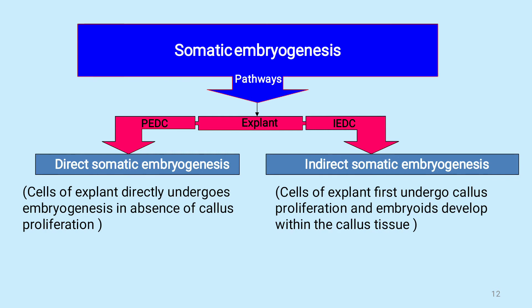The somatic embryogenesis pathway has two routes: direct somatic embryogenesis and indirect embryogenesis. In direct embryogenesis, cells of the explant directly undergo embryogenesis in the absence of callus proliferation — you directly get the embryos. In indirect somatic embryogenesis, cells of the explant first undergo callus proliferation, and embryoids develop within the callus tissue.